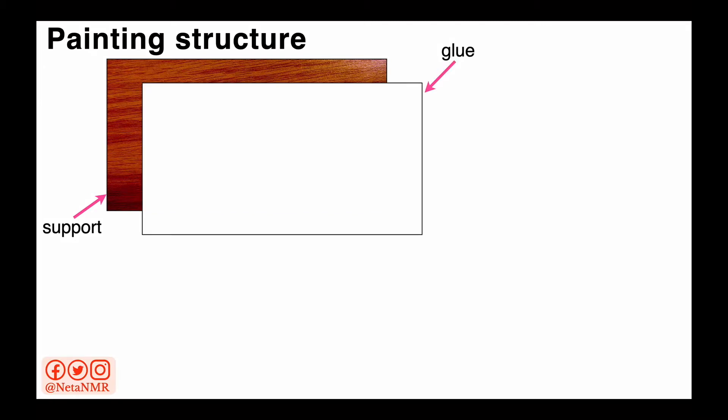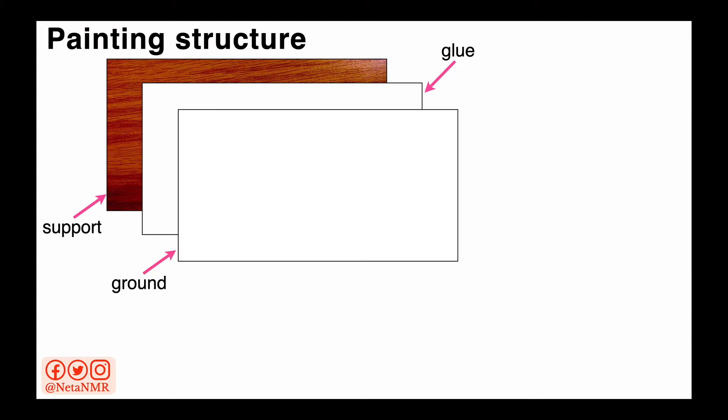On top of the support, there is a layer of glue. There are different uses of glue in the painting structure. Glue can be used in the lining of the painting, where conservators used to add animal glue to a canvas and then add another canvas on top of it for consolidation. Glue can also be used to add the ground layer.